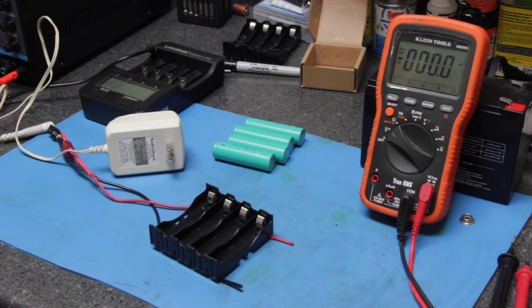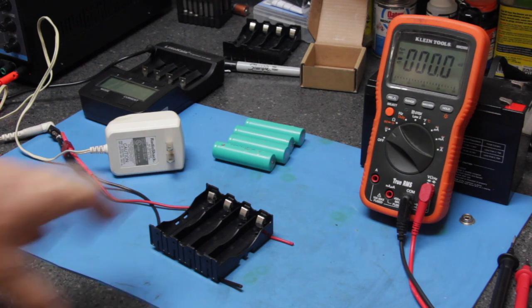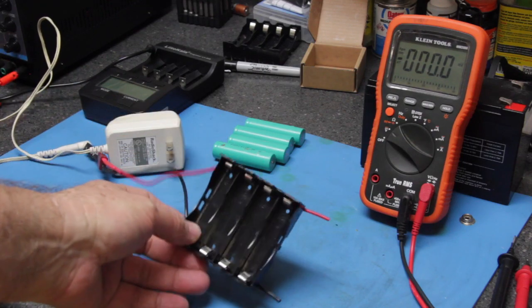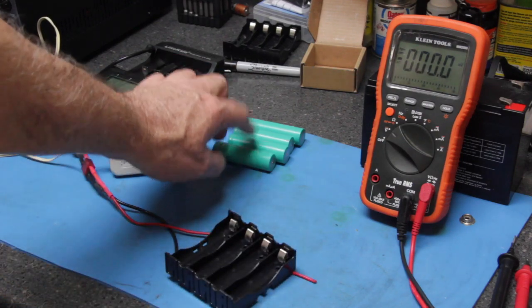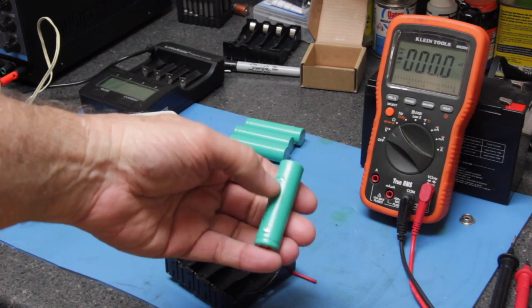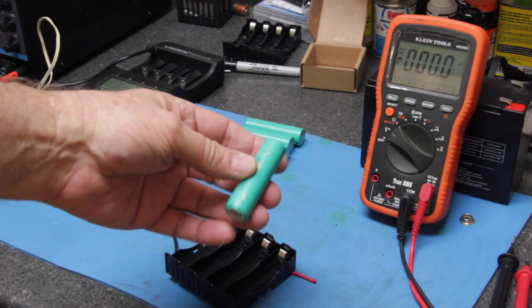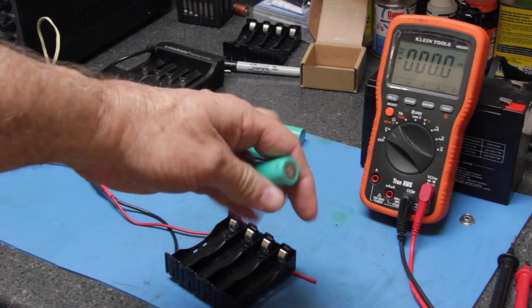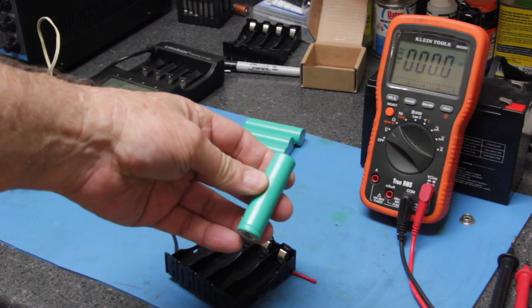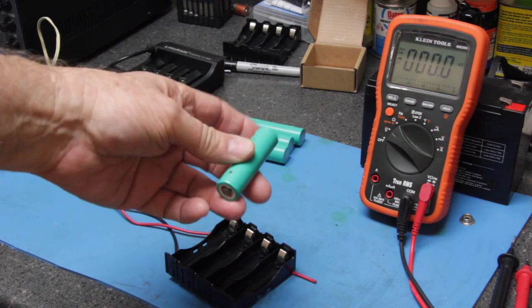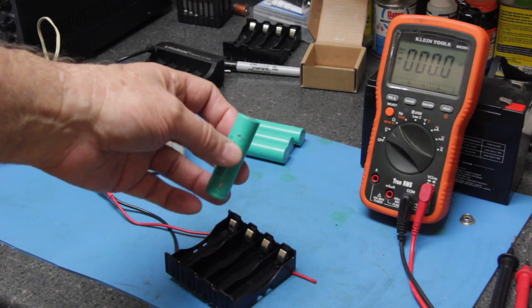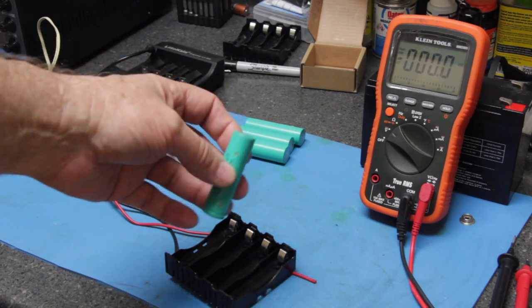When a lithium-ion cell is this low, what you have to do to bring it back to life is you have to politely shock it back into existence. I started out making an 18650 cell holder. By the way, if you don't know, these are 18650 cells, which means it's 18 millimeters in diameter and 65 millimeters in length. All the cells are given a designation that closely resembles their size.